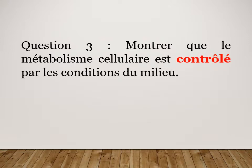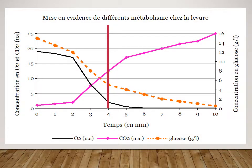Dans la question 3, vous devez montrer que le métabolisme cellulaire est contrôlé par les conditions du milieu. De la même façon, puisqu'on sait qu'il se passe quelque chose au bout de quatre minutes, on va regarder quel est le facteur qui devient limitant ou qui permet de dire qu'à partir de ce moment-là il y a un changement.